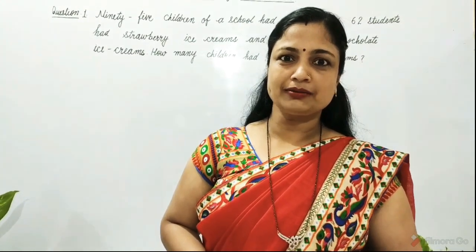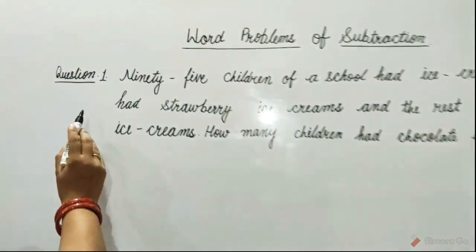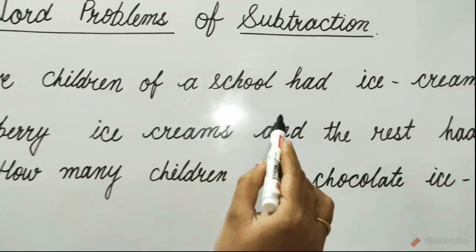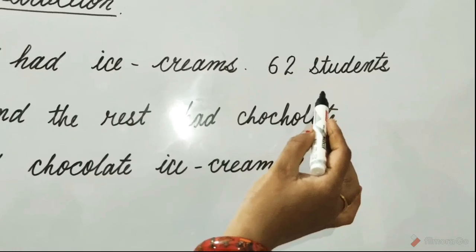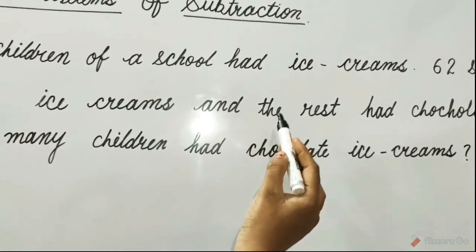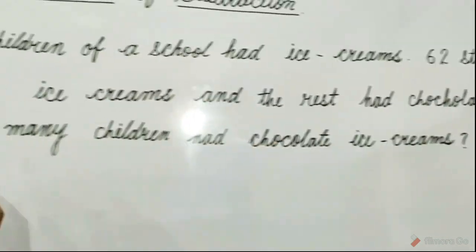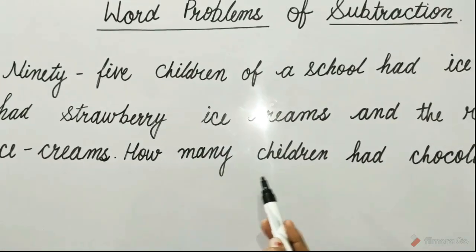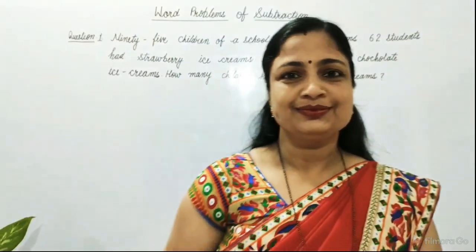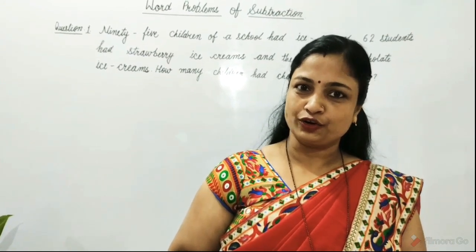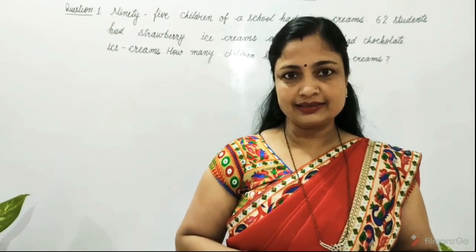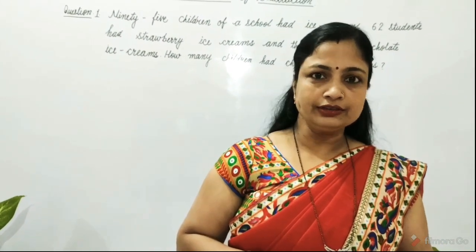Let's see question number 1. 95 children of a school had ice creams. 62 students had strawberry ice creams, and the rest had chocolate ice creams. How many children had chocolate ice creams? To know how many children had chocolate ice creams, we will subtract the children who had strawberry ice creams from the total number of students.